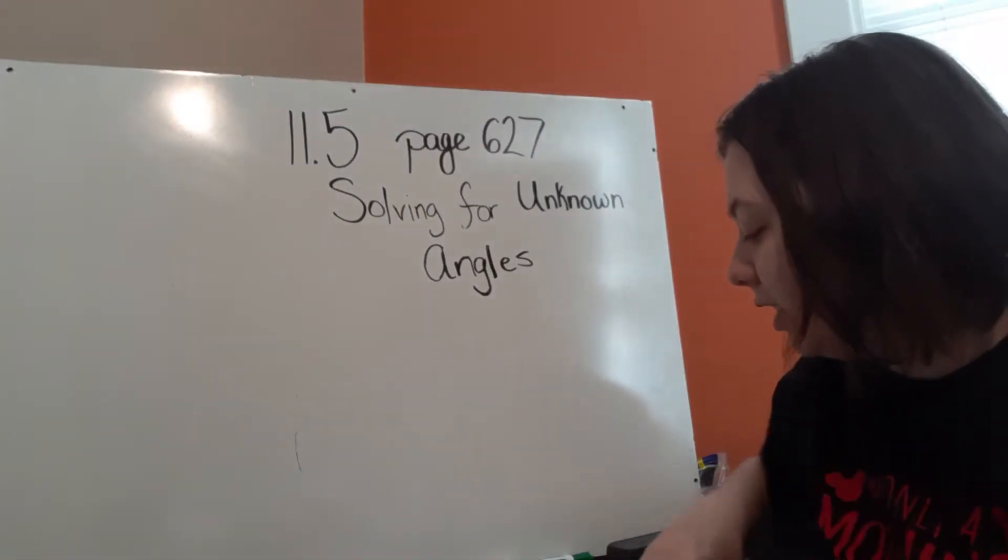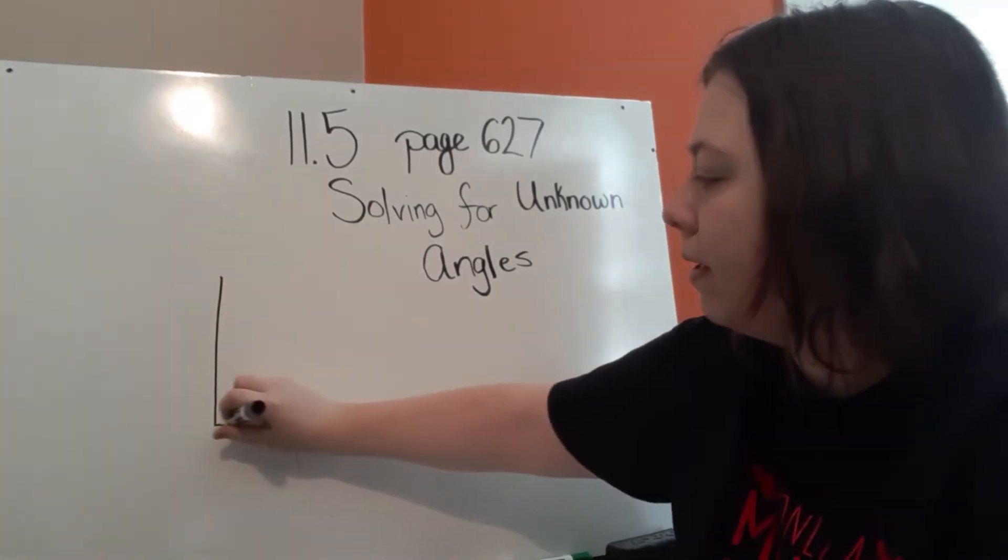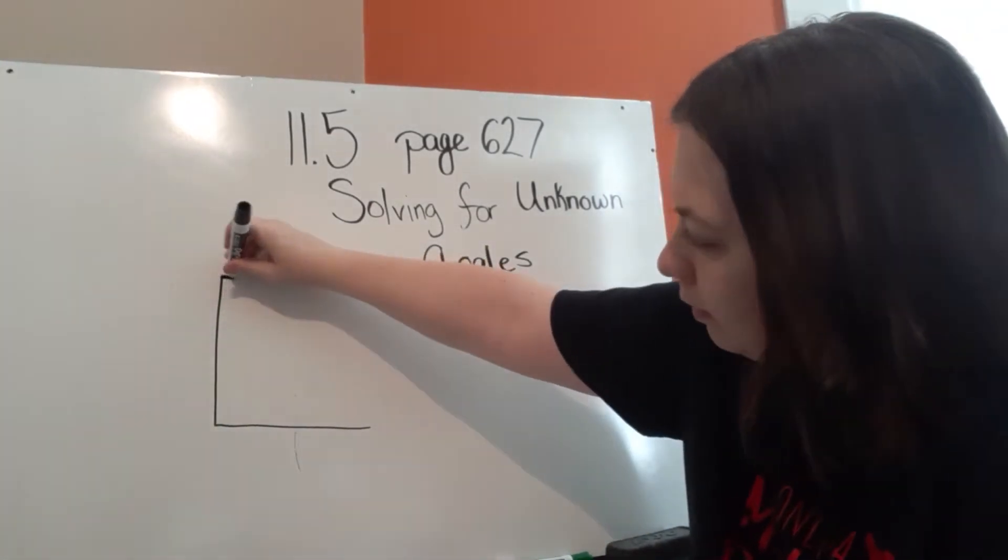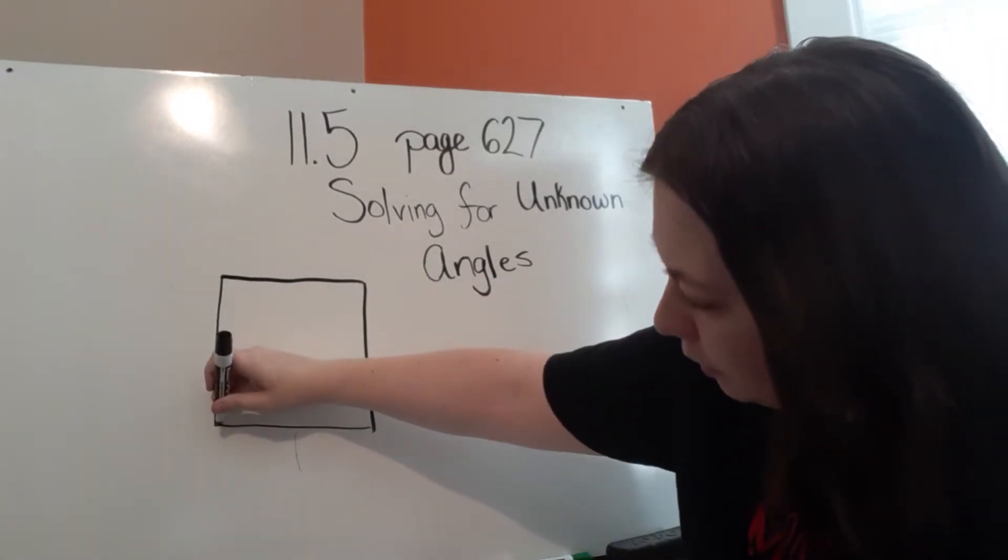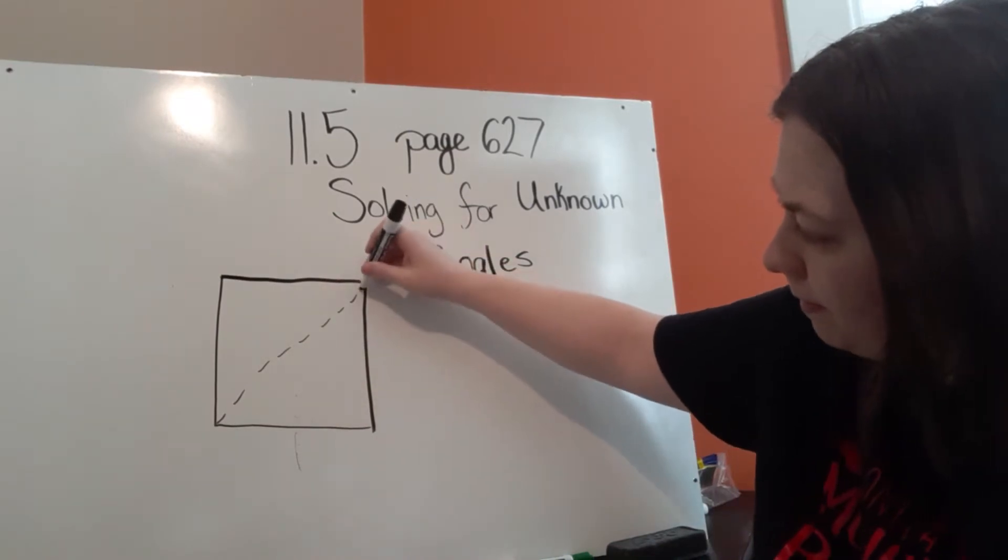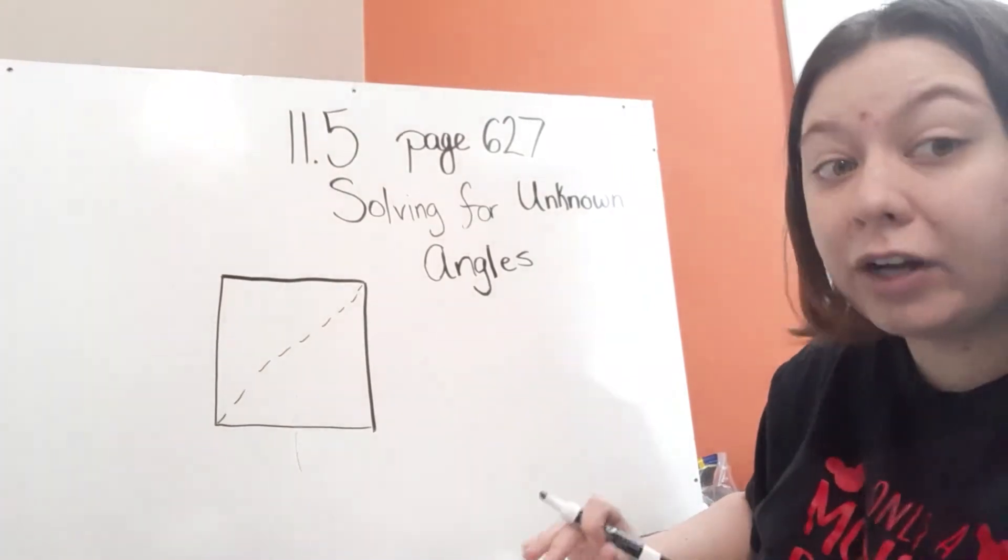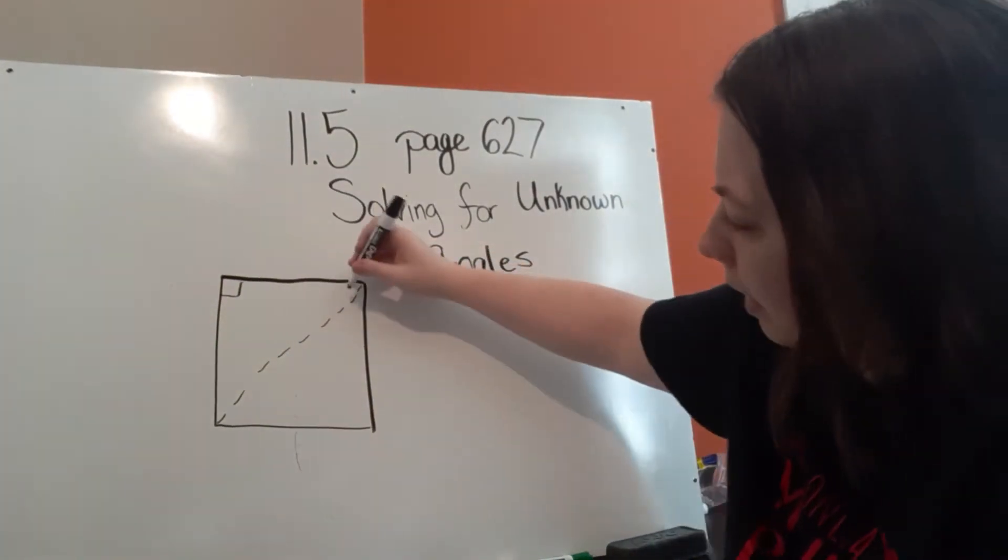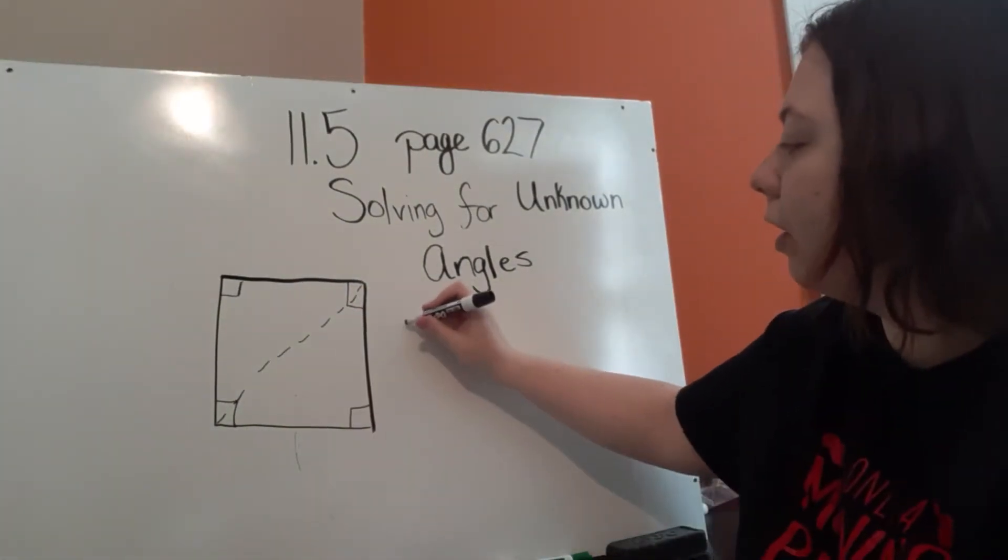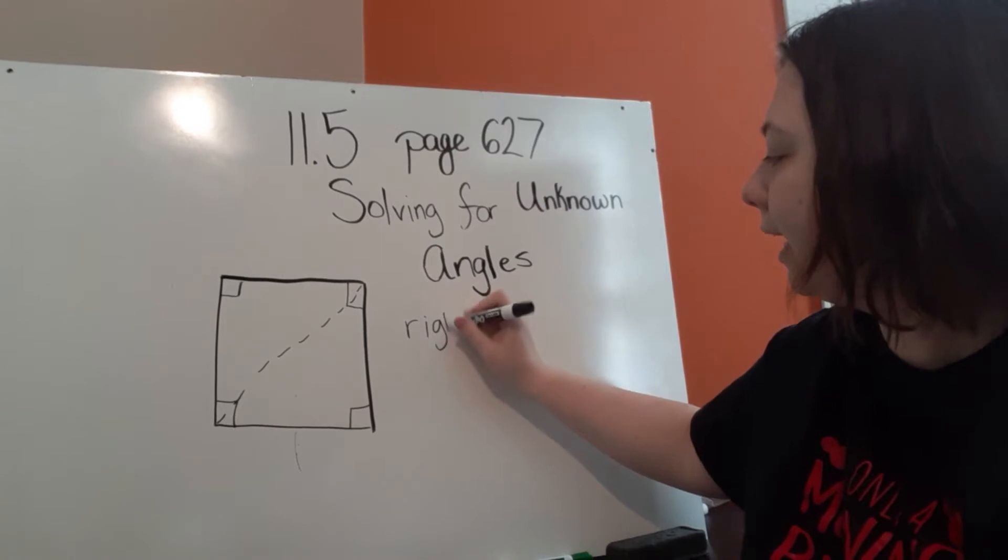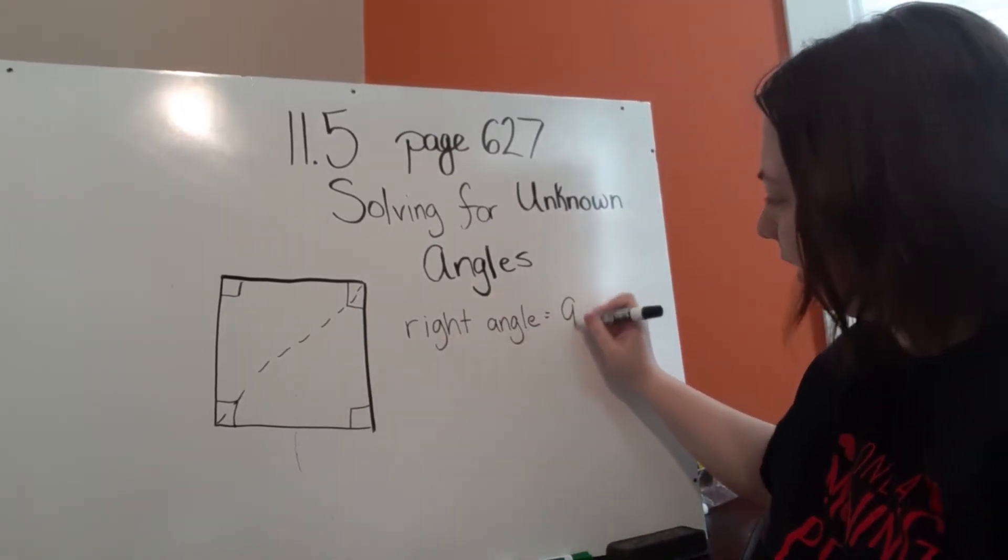So we're going to look at page 627 at that unlock the problem. For unlock the problem they have a square and it looks like it has been divided in half. Now we already know that squares are made up of right angles and we know that a right angle equals 90 degrees.